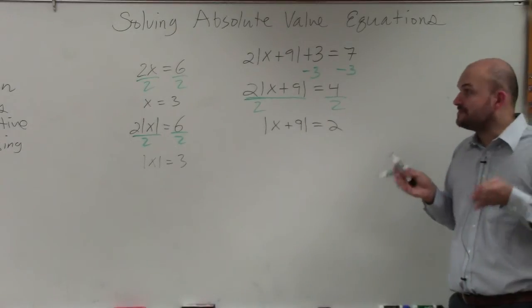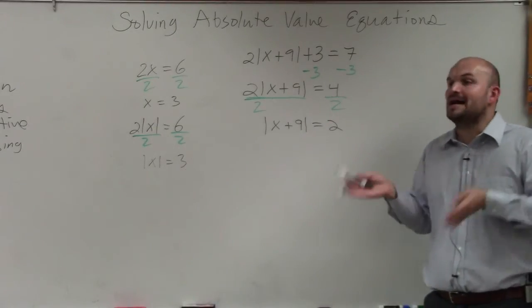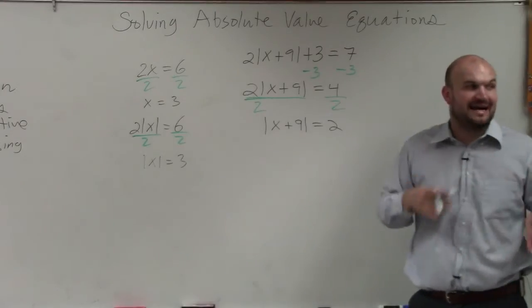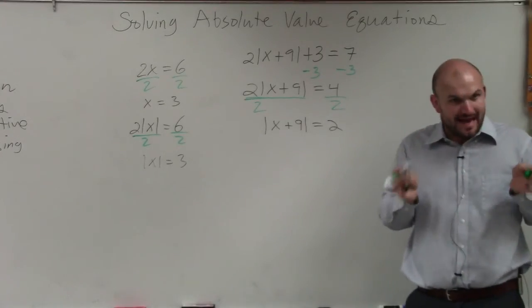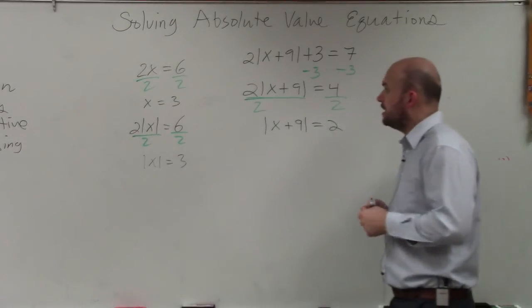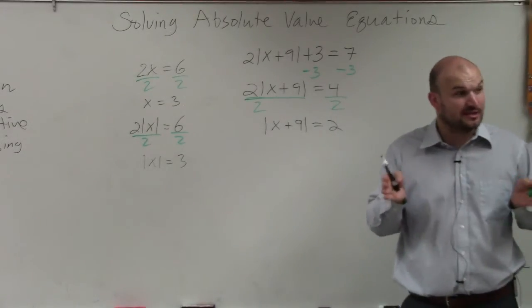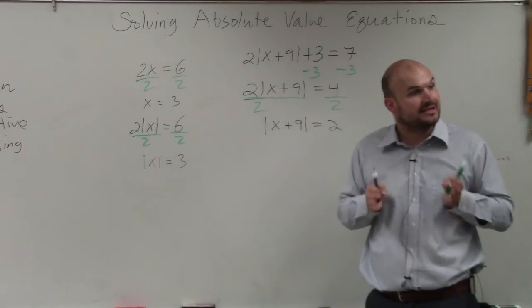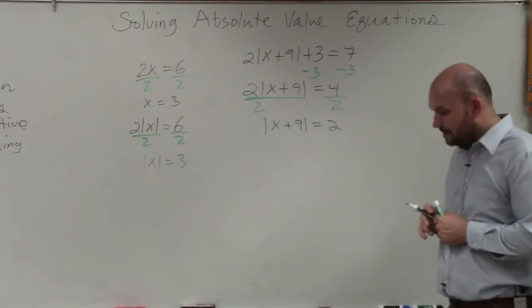Remember, absolute value are not grouping symbols. So we're not going to multiply into them or divide into them. They represent absolute distance, they don't represent grouping symbols. Just remember, it gets really confusing because they look just like brackets, but they don't represent brackets. So now we go into step 2.